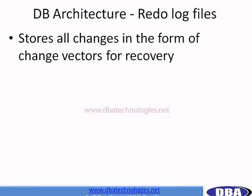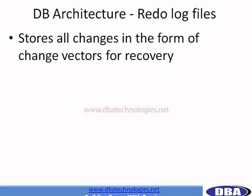Now let's talk about redo log files. Redo log files store all the changes in the form of change vectors and change records. A change record contains multiple change vectors. For example, when updating a table, there is old information for undo and new information for the actual data files — these two are two change vectors that combine to form a change record, which eventually gets saved to redo log files.